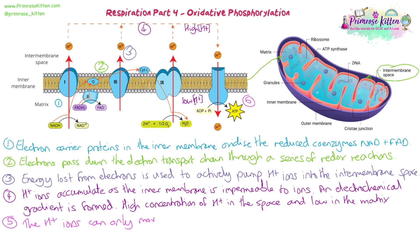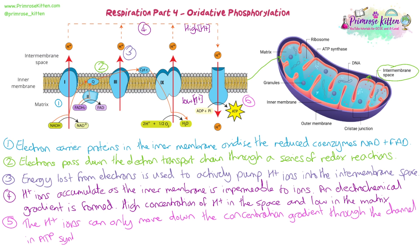The H+ ions can only diffuse down the concentration gradient through the channel in ATP synthase. That flow of H+ ions through ATP synthase helps catalyse the phosphorylation of ADP to ATP — this is how the majority of ATP is made. The more reduced NAD and FAD that arrive and bring hydrogen ions and electrons, the more ATP we can make. Notably, FAD delivers its electrons and hydrogen ions to the second protein in the electron transport chain, not the first, so its electrons give off less energy and fewer hydrogen ions are pumped across — this is why FAD produces slightly less ATP than NAD.